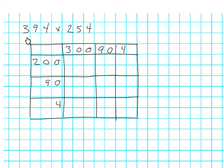You can see on this page we've got 394 multiplied by 254. This is much more difficult. It's going to take us a little bit more time but again the principle is the same. We break it up into the hundreds, break each of these numbers up into the hundreds, tens, and units.